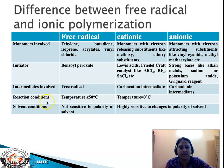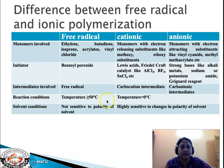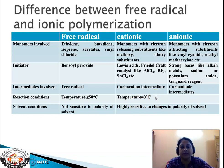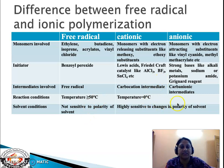Let us see the reaction conditions. Under free radical polymerization, the temperature should be greater than or equal to 50 degrees centigrade. Whereas under ionic polymerization — both cationic and anionic — a temperature of 0 degrees centigrade is favored. Free radicals in polymerization are not sensitive to polarity of the solvent, whereas ionic polymerization is highly sensitive to changes in polarity of the solvent.